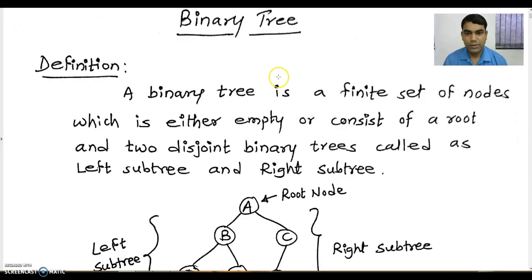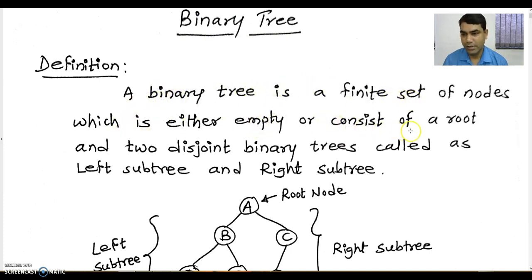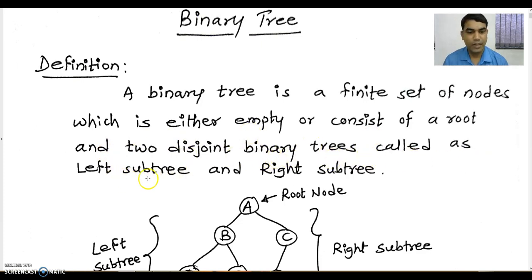First of all we are going to see the definition of the binary tree. A binary tree is a finite set of nodes which is either empty or consists of a root node and two disjoint binary trees, also called the left subtree of the root node and right subtree of the root node.